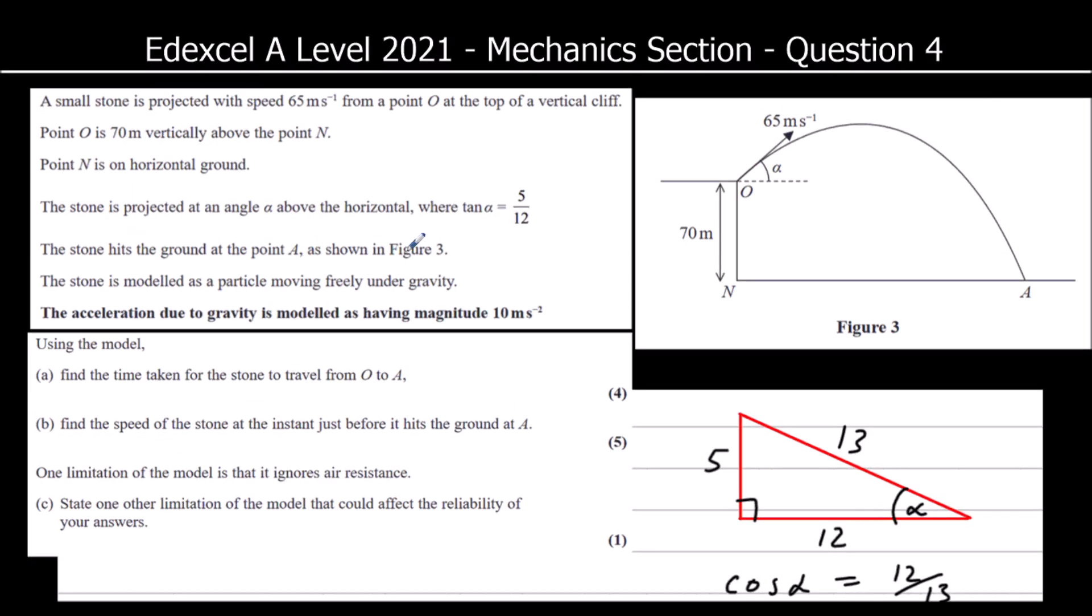The stone hits the ground at point A. The stone is modeled as a particle moving freely under gravity, and we're using acceleration due to gravity as 10 meters per second squared. Find the time taken for the stone to travel from O to A.